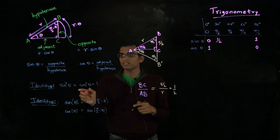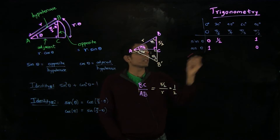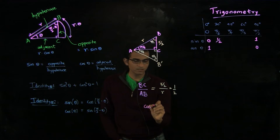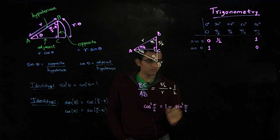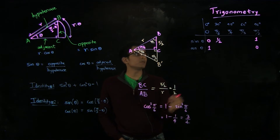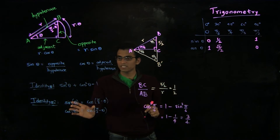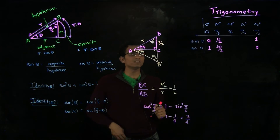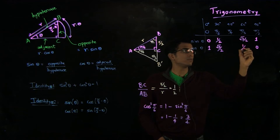Using the identity sin squared theta plus cos squared theta equals 1, we can compute cos squared of Pi by 6 as 1 minus sin squared of Pi by 6, which is 1 minus 1 over 4, giving 3 over 4. So cos of Pi by 6 is square root of 3 over 2. And using the identity sin theta equals cos of Pi by 2 minus theta, we can infer that sin of Pi by 3 is square root 3 over 2 and cos of Pi by 3 is one half.